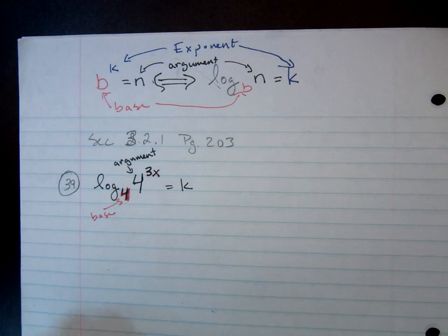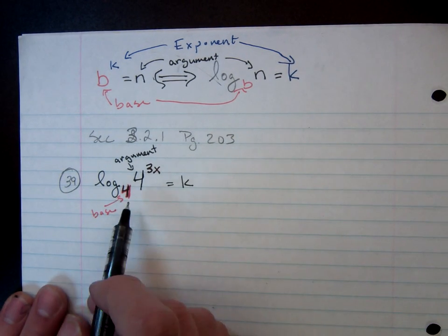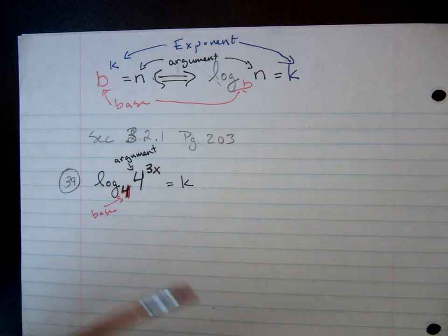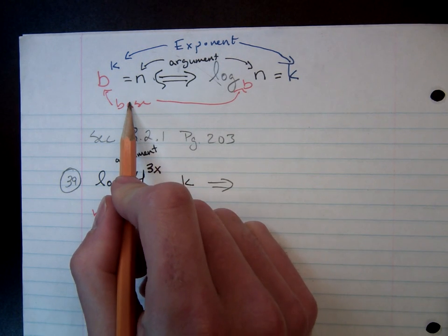Well, we need to figure out what k could equal, because that will tell us what the whole thing is. So I noticed that with the way this is set up with the logarithm, I'm not going to be able to do much. So I'm going to rewrite it as an exponential function.